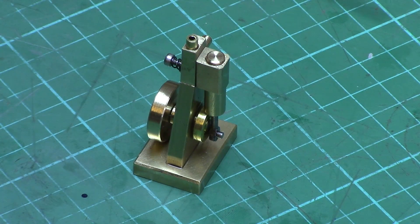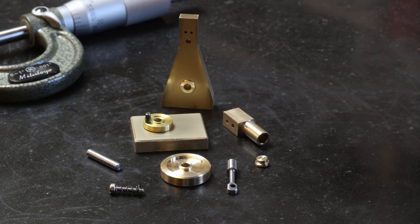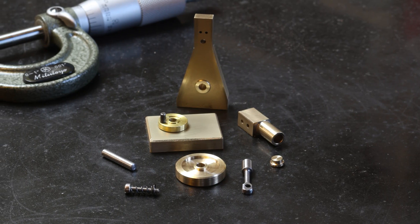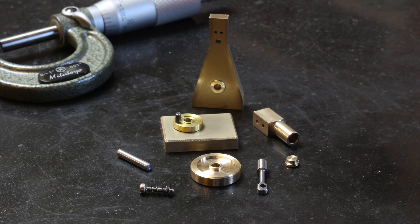The piston top cap was machined to be a light press fit into the 4mm bore, and threadlock was used to ensure an airtight seal.